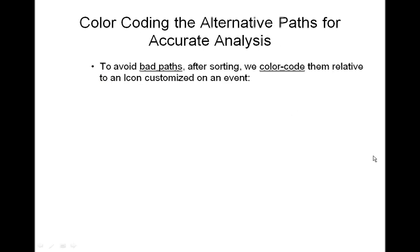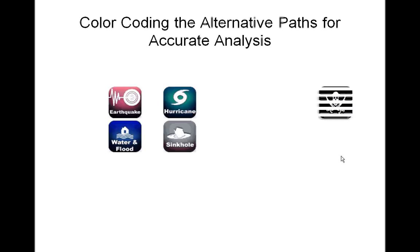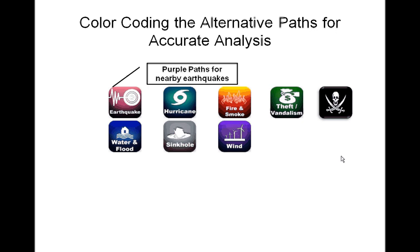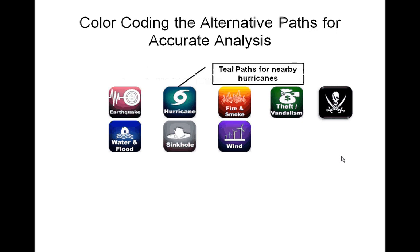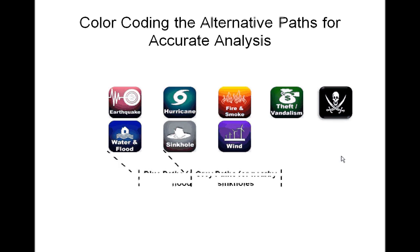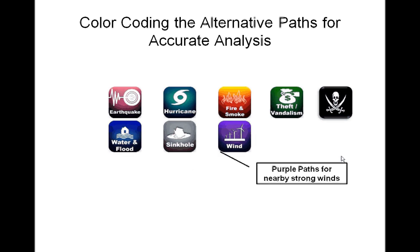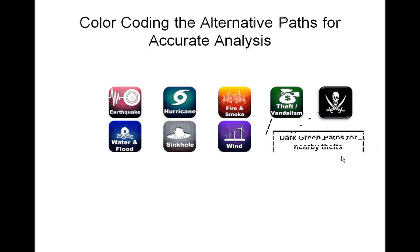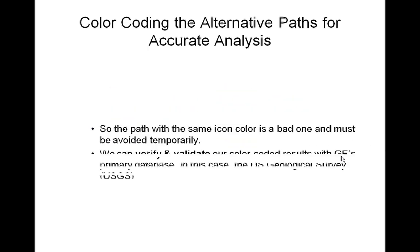To avoid bad paths after sorting, we color code them relative to a customized icon for each event type. The following events are represented: purple paths for nearby earthquakes, teal paths for nearby hurricanes, golden paths for nearby fires, blue paths for nearby floods, gray paths for nearby sinkholes, purple paths for nearby strong winds, dark green paths for nearby thefts, and finally a black path for piracy, which has been occurring more often in recent years. A path with the same icon color is a bad one and must be avoided temporarily.